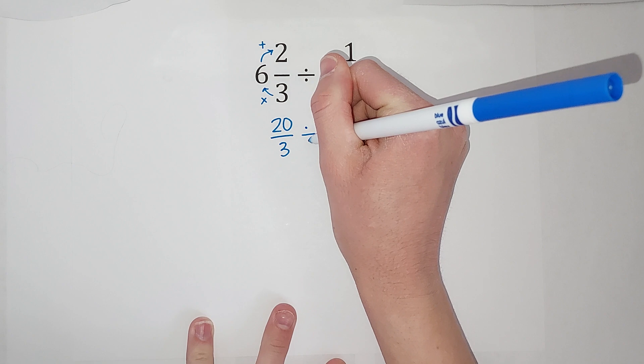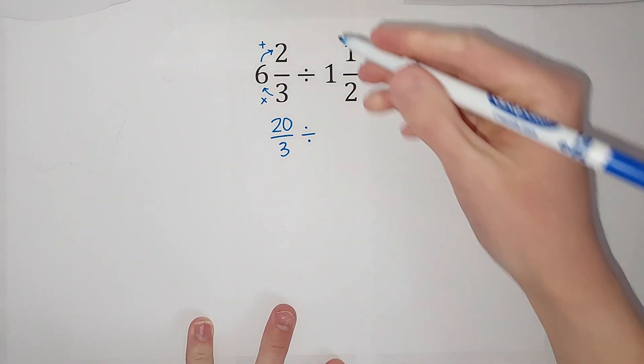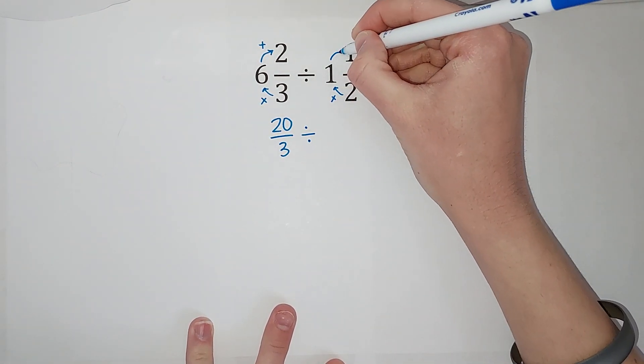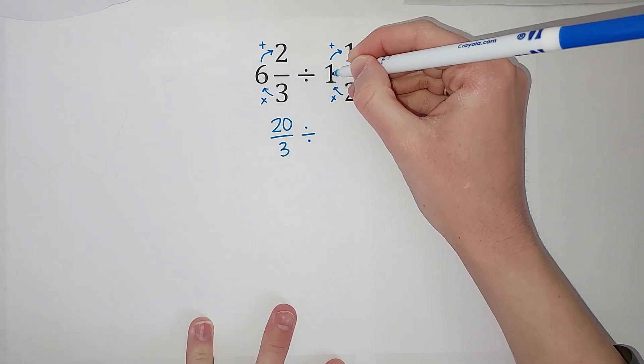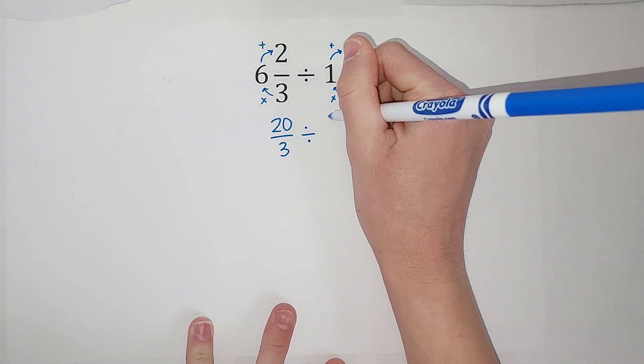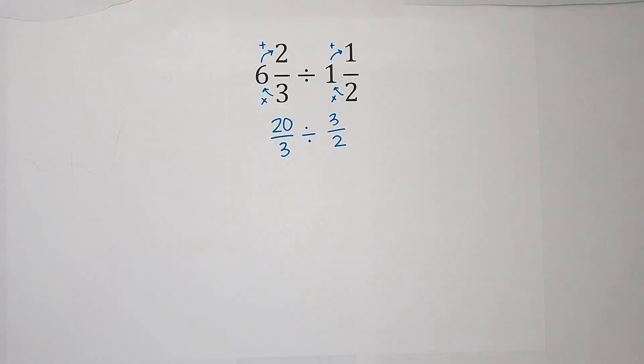So now we have twenty-thirds divided by, I'm going to change this one into an improper fraction. Two times one gives me two plus one gives me three. And it's three over two.